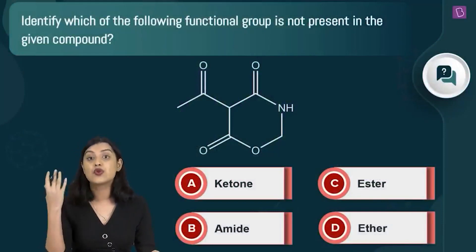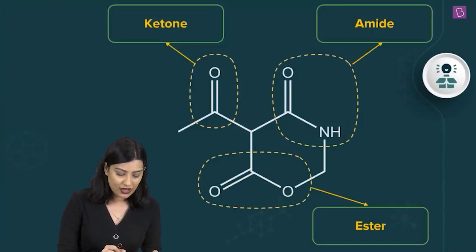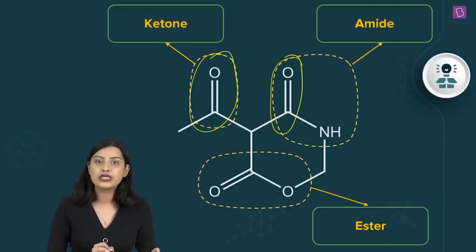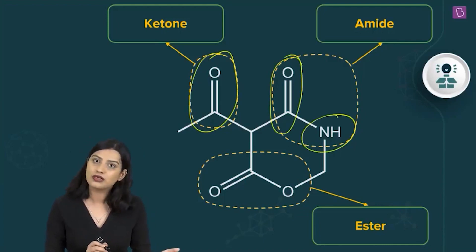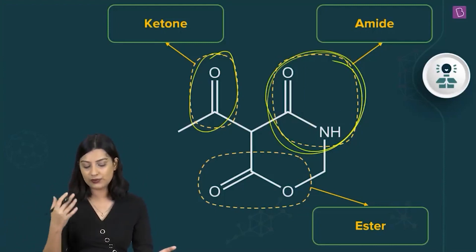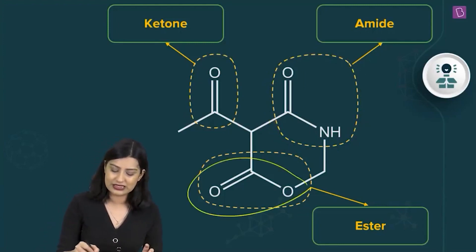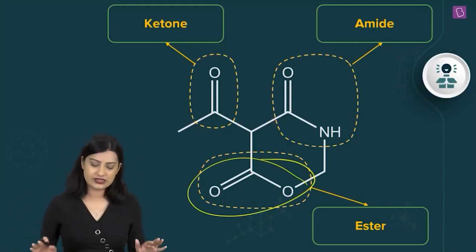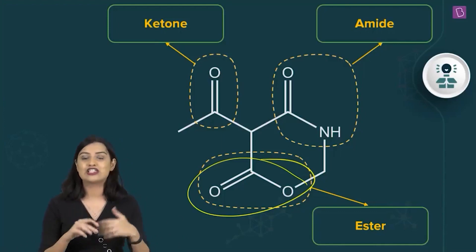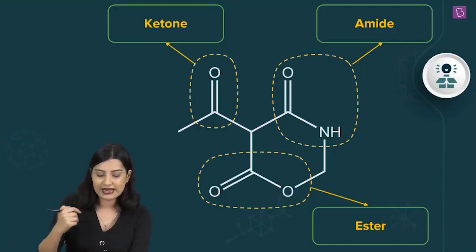The final question involves an organic molecule and asks which functional group is not present. The compound contains two ketone groups and a C–O–N–H group. This last group must be identified carefully: C–O–N–H is an amide, not an amine. There is also an ester group (R–COO–R'). So the functional groups present are ketone, amide, and ester.